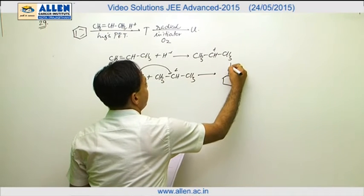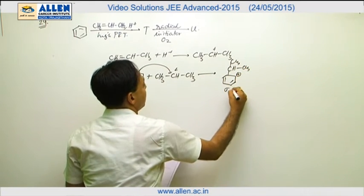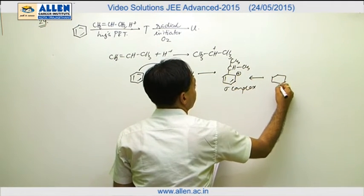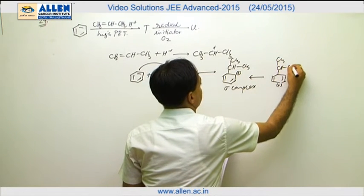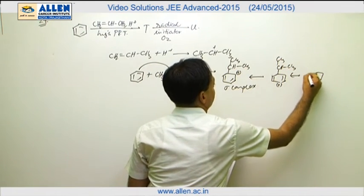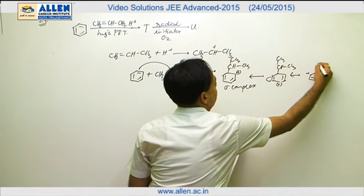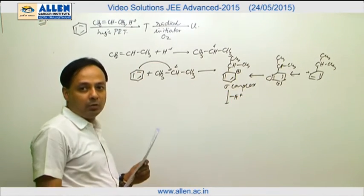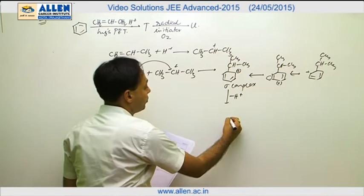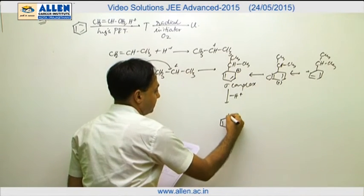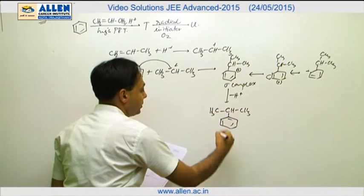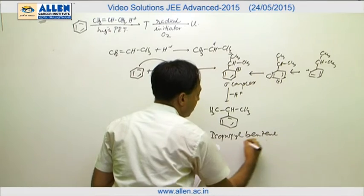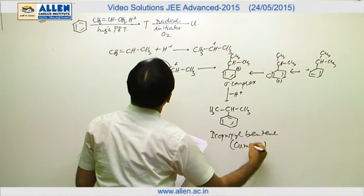We can write it this way — this is forming a sigma complex which undergoes resonance. That sigma complex loses a proton, which is called deprotonation. The product is isopropylbenzene, which is called cumene, given as T.